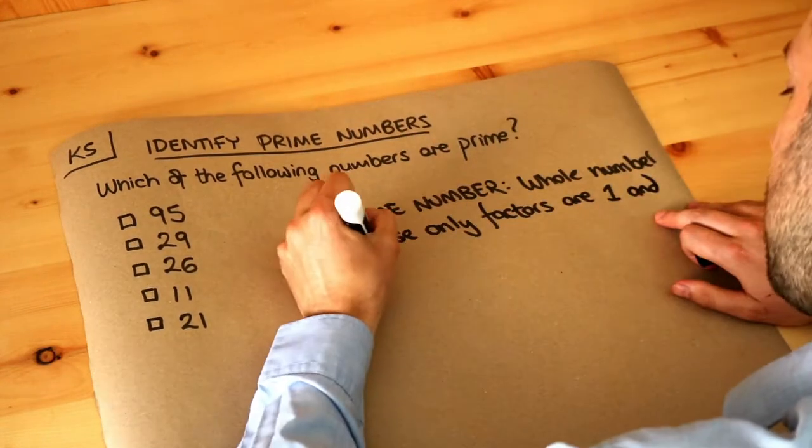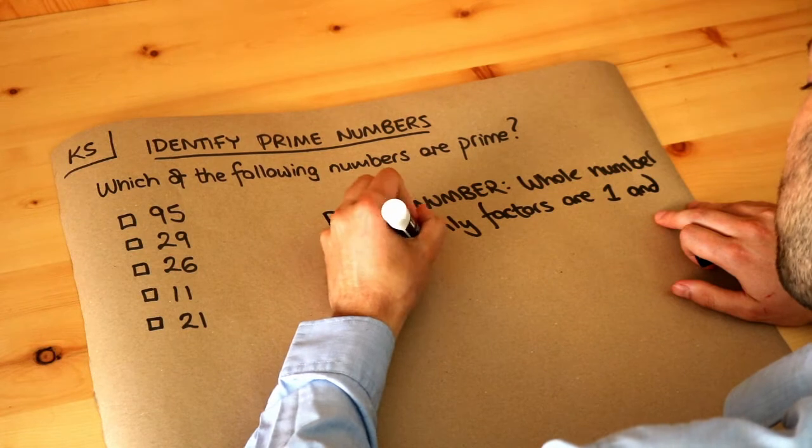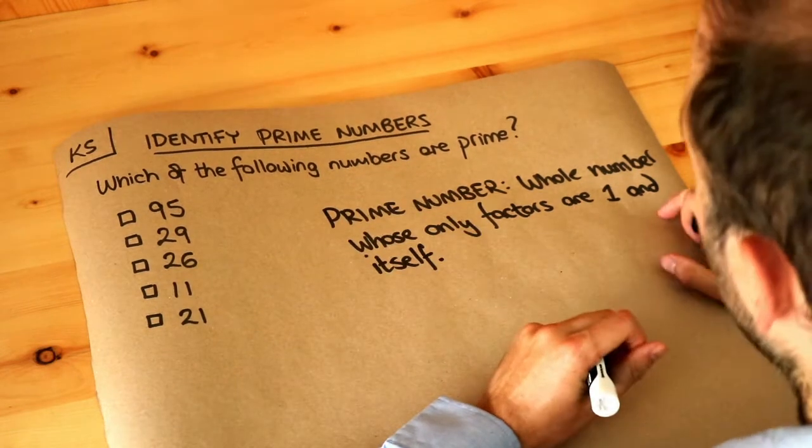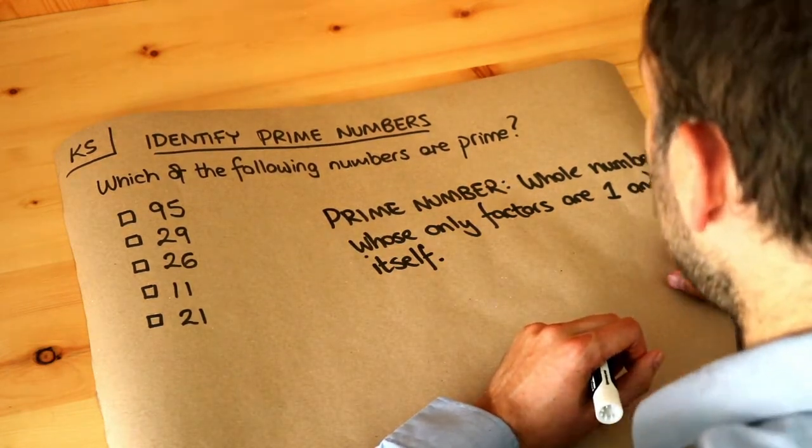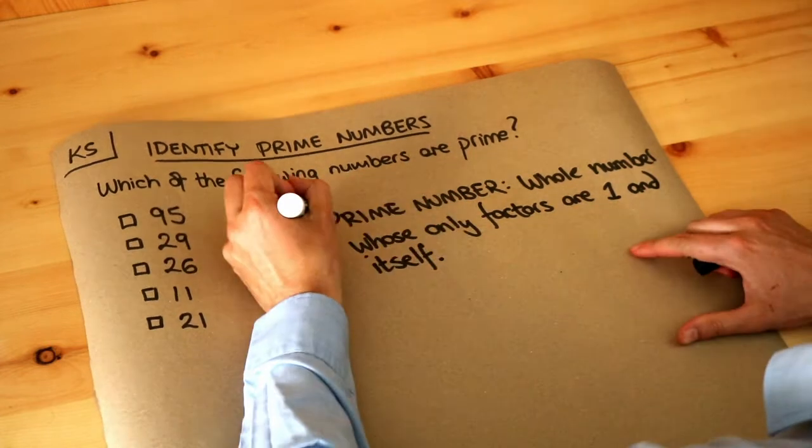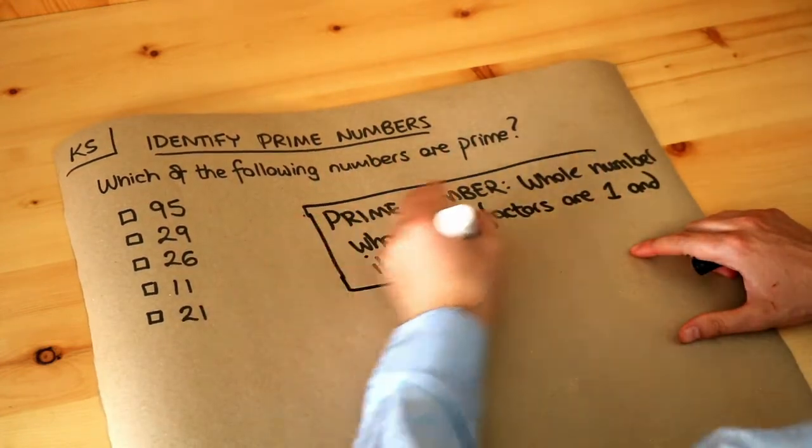Hopefully you've already viewed the video on what a factor is. Remember, a factor is a number that you can divide something by without a remainder, and basically what a prime number represents is a number which is not very divisible.